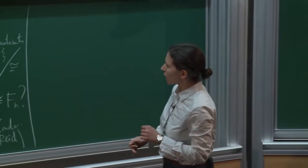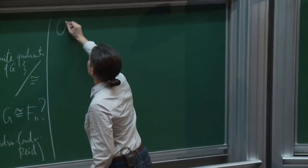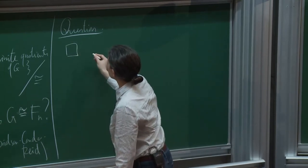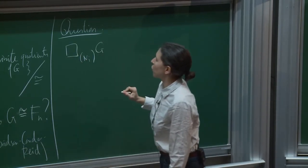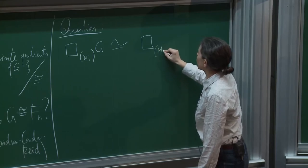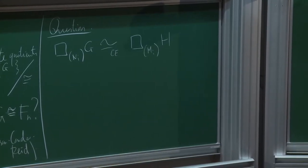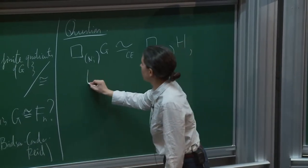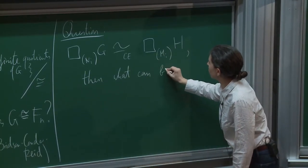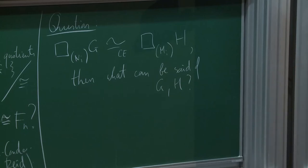With this question in mind, let's think about what this could be in the world of geometry. The question we're going to think about is: suppose I have a residually finite group G with a filtration and I take the box space, and then I take another group H — suppose I know that the box spaces are geometrically similar. What can I conclude about the groups G and H?